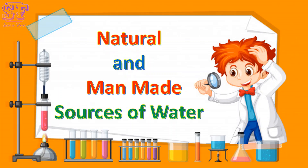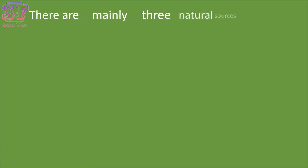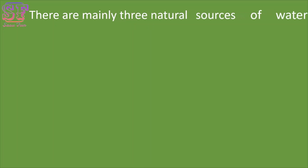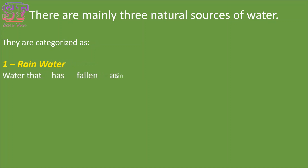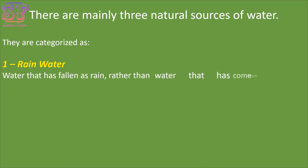There are mainly three natural sources of water. These are categorized as: rainwater, that has fallen as rain rather than water that has come from a tap.